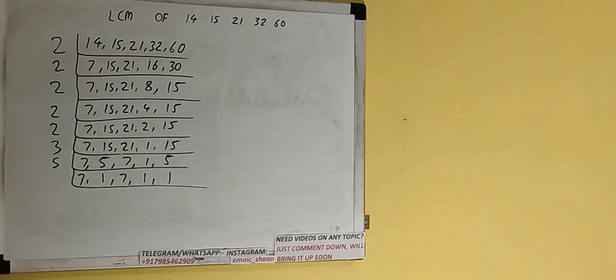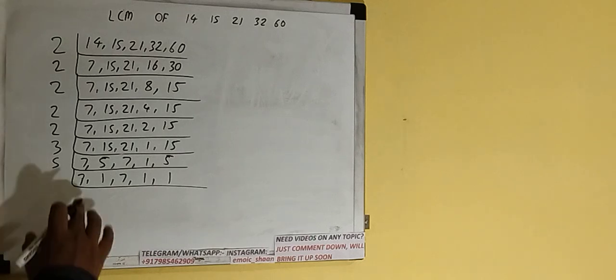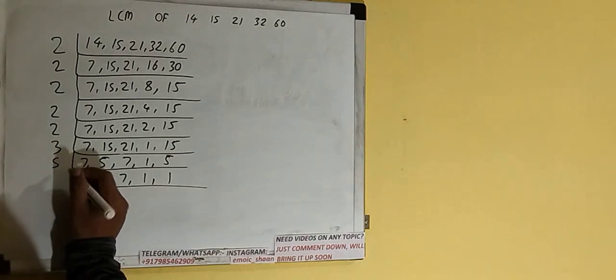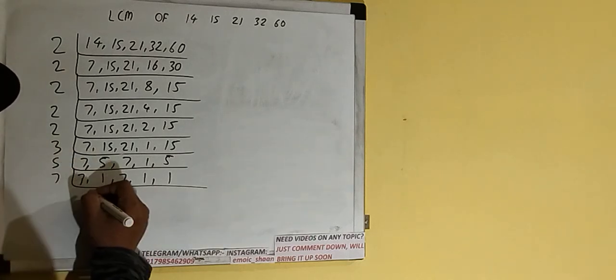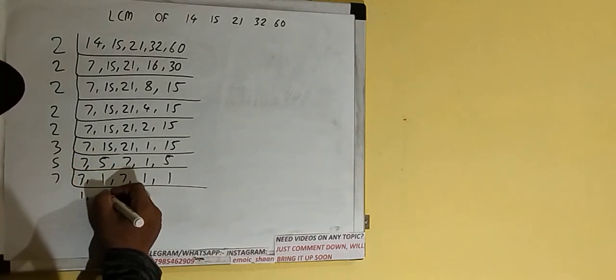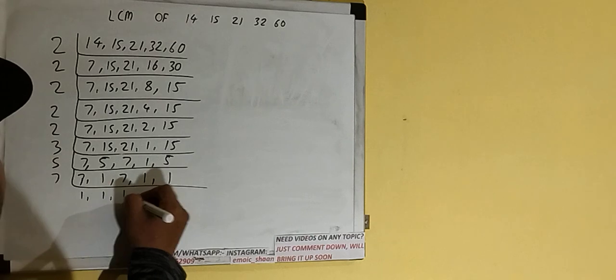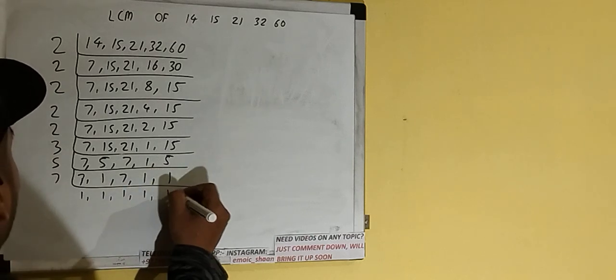None of the numbers is divisible by 5 either, so we check with the next lowest prime number, which is 7. The first and the third numbers are divisible by 7, so we divide and all the numbers become 1.